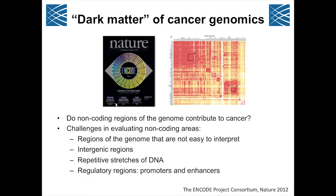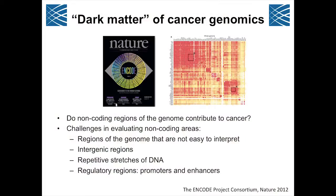The topic of my talk is what we've colloquially called 'dark matter cancer genomics.' By and large, most sequencing studies using massively parallel sequencing have focused on the exome — generally about one to two percent of the human genome — to look for oncogenic mutations and tumor suppressor alleles. One question we wanted to address was: do non-coding regions of the genome contribute to cancer? There are many difficult challenges to this, both computational and interpretive, as these are large intergenic regions with repetitive stretches of DNA.